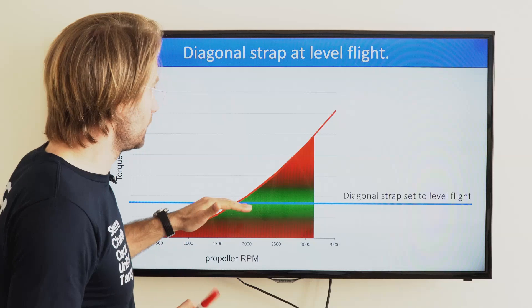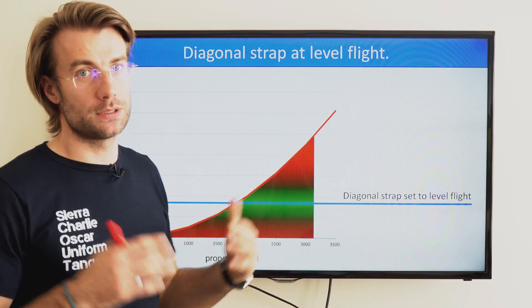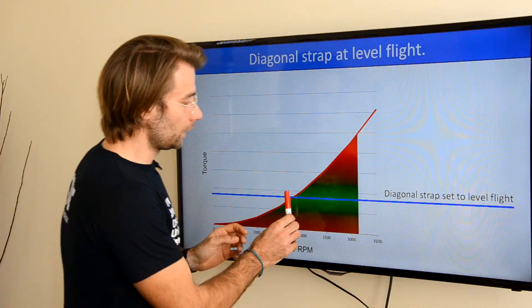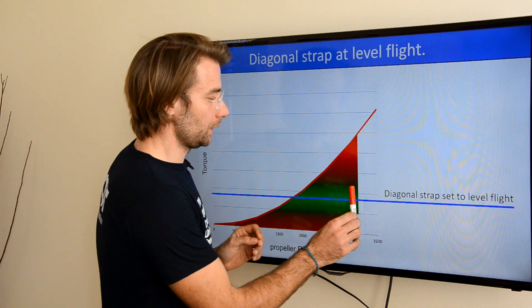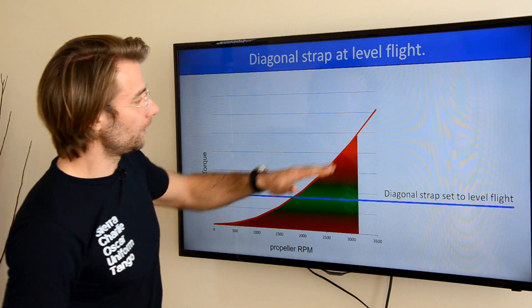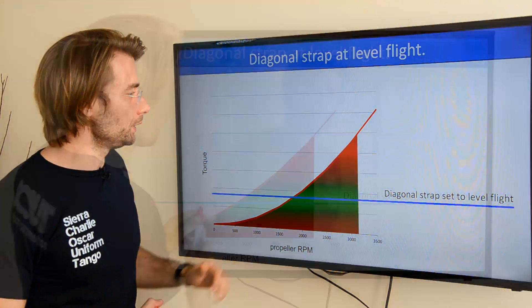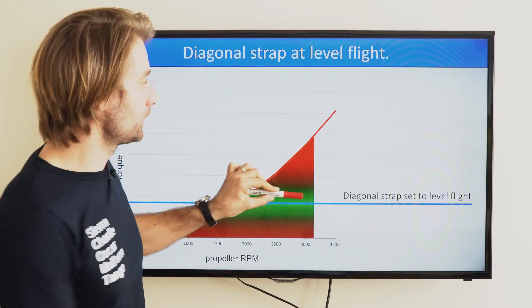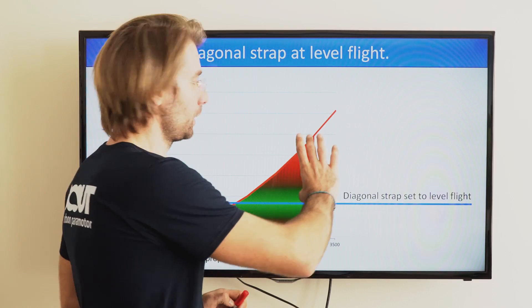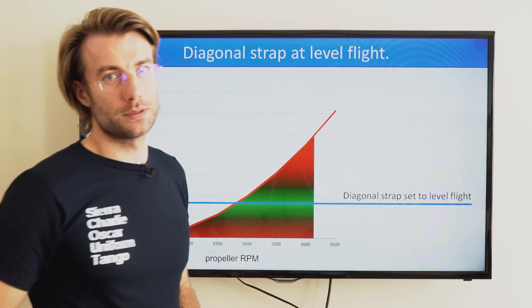The only problem is that when I want to add power, let's say for a full power climb out, I add rpm at throttle and my torque increases rapidly as it is a square function of speed. But my diagonal strap remains the same. So at full power climb out I'm facing this much uncompensated torque.